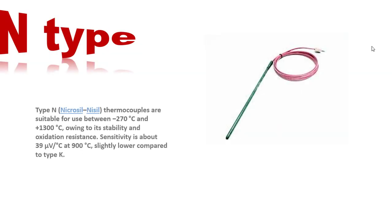Type N thermocouples are suited for use between -270°C and +1300°C due to their stability and oxidation resistance. Sensitivity is about 39 µV per °C at 900°C, slightly lower compared to Type K.